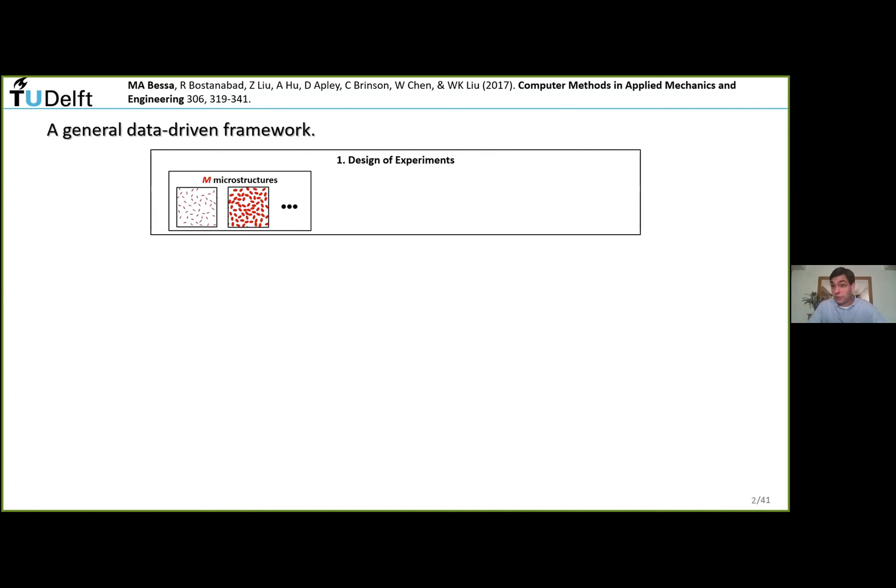Our answer is a data-driven framework. The general workflow starts with defining your inputs - design of experiments. For materials, the variables you can define are the microstructure and properties of the materials. You also subject the material to different boundary conditions - deformation, temperature, loading conditions. This defines the knobs that we can turn to design or analyze different classes of materials.